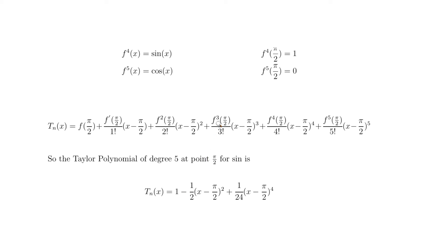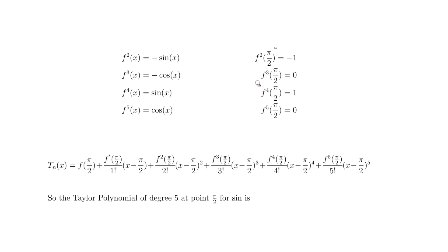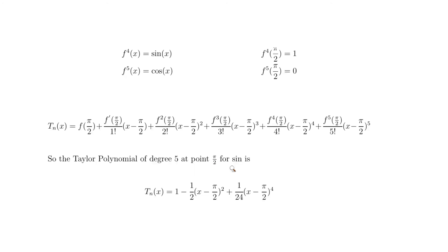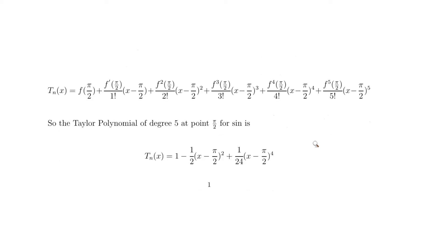The third derivative is also 0, so the cubic term disappears. The fourth derivative is 1, giving 1 over 4 factorial = 1/24, so we get (1/24)(x − π/2)⁴. The fifth derivative is 0, so that term also vanishes. Our final Taylor polynomial for sine at π/2 to degree 5 is: 1 − ½(x − π/2)² + (1/24)(x − π/2)⁴.